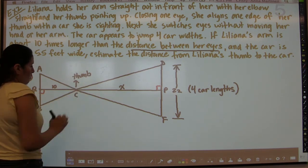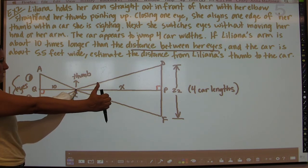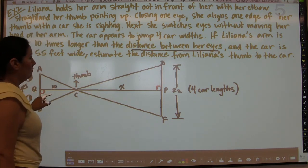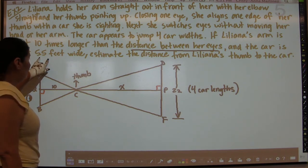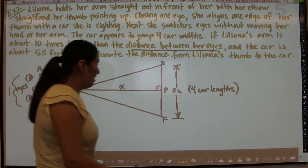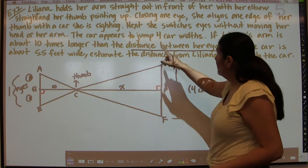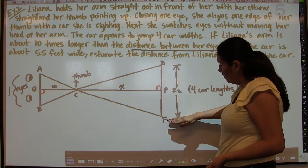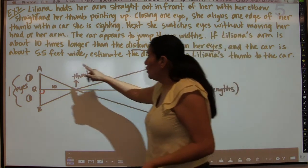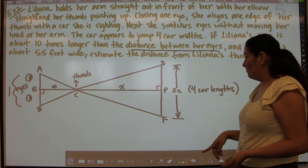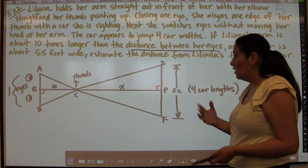Her thumb is at point C. When she closes one eye and switches to the other, the car appears to jump four car widths. Since each car is 5.5 feet wide, four times 5.5 equals 22. So the distance DF is 22 feet. We're trying to find X — the distance from her thumb to the car.